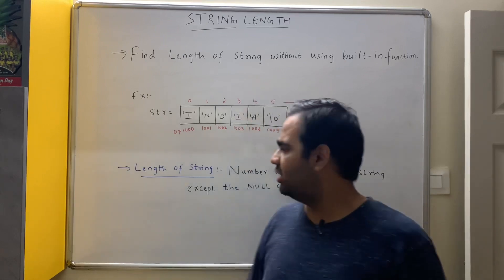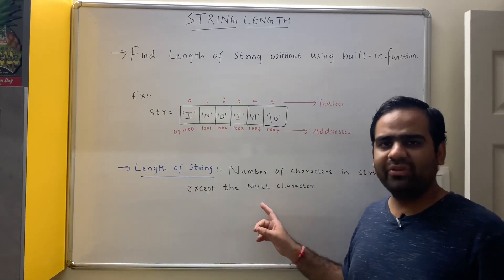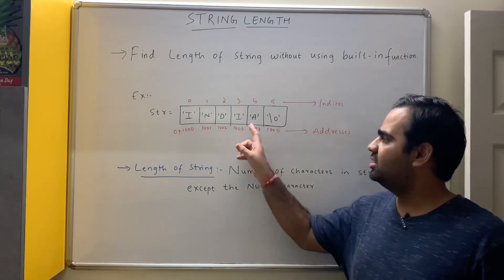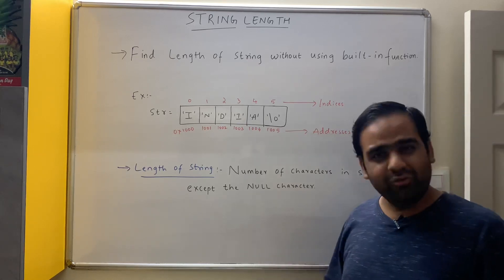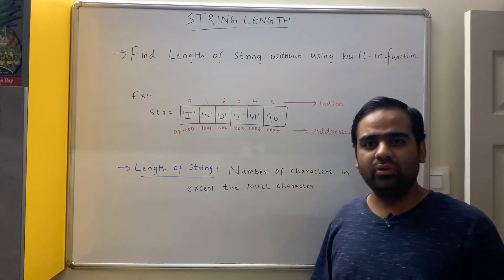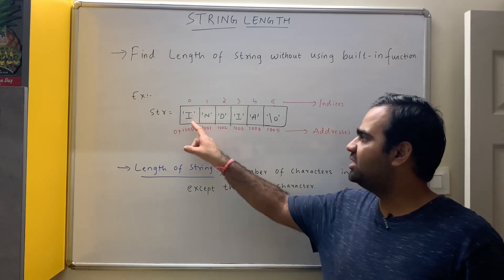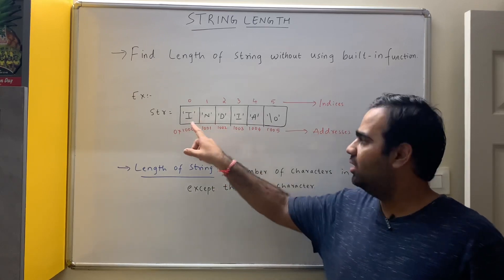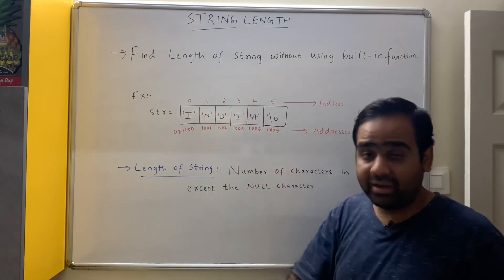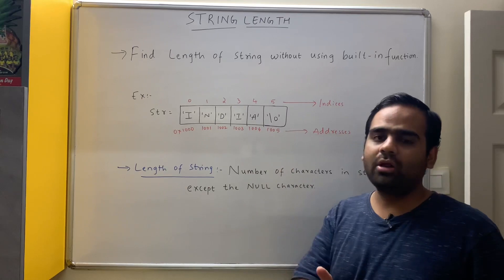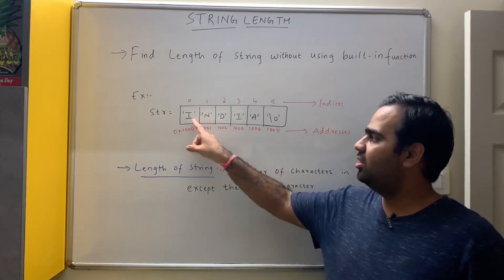What is the length of the string? Length of the string is the number of characters in the string except the null character. That means we are not going to count the null character. How many characters are there in the string India? 1, 2, 3, 4, 5, 6. But we do not count the null character. Therefore, the string length is 5.